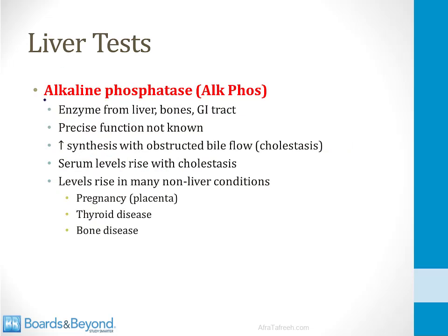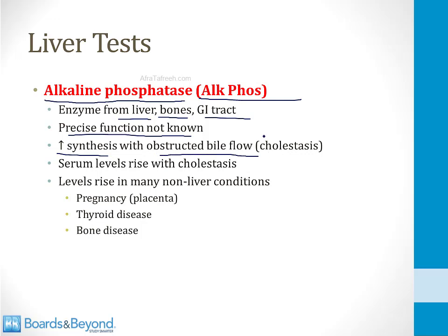The next blood test used to assess the status of the liver is measurement of the serum level of the enzyme alkaline phosphatase, which most people just call Alkphos. This is an enzyme that comes from the liver, though you can also find it in bones and in the GI tract. Its precise function is actually not known. The most important thing to know is that there is increased synthesis of this enzyme with obstructed bile flow, which is called cholestasis. Bile duct epithelial cells begin to synthesize more of this enzyme, and an elevated Alkphos level is a hallmark of cholestasis.